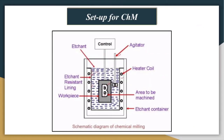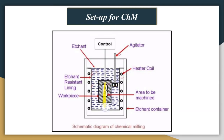As shown in this figure, the container is filled with etchant. The work piece is shown where area 'B' is written — that is the area where there is no masking. The rest of the portion, shown by the lines in the diagram, has masking applied on it.